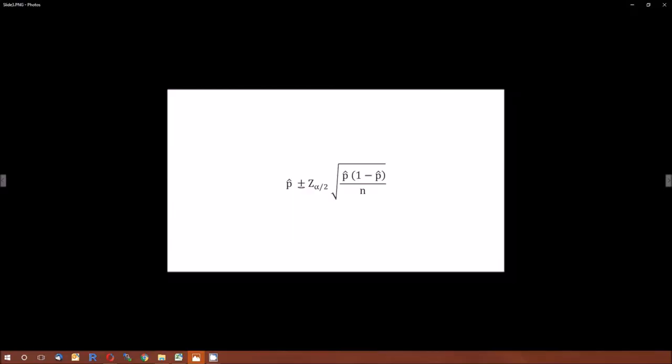For the proportion, let's go to the formula. The formula is p-hat plus or minus that z of alpha over 2 times the square root of p-hat times 1 minus p-hat divided by n. p-hat is the sample proportion, n is the sample size, and this z of alpha over 2 is the distributional multiplier.